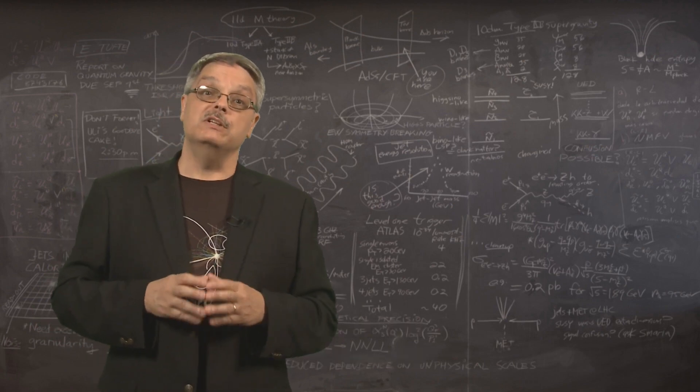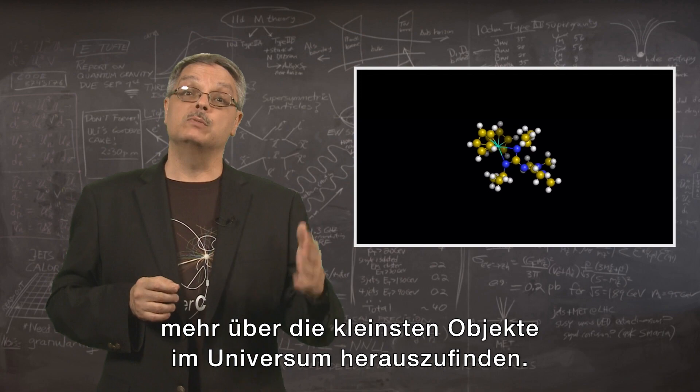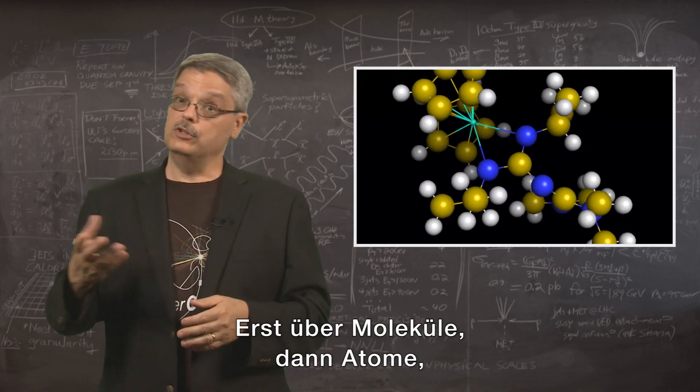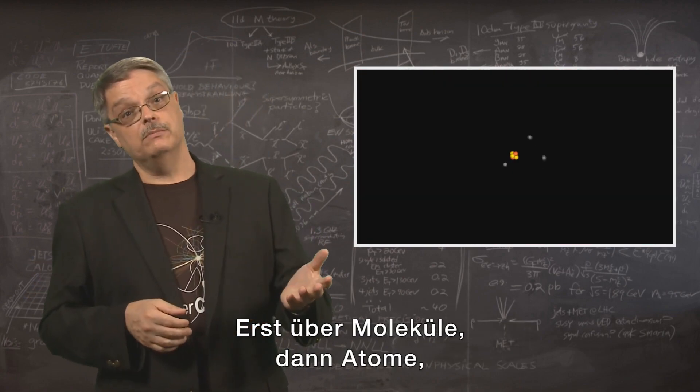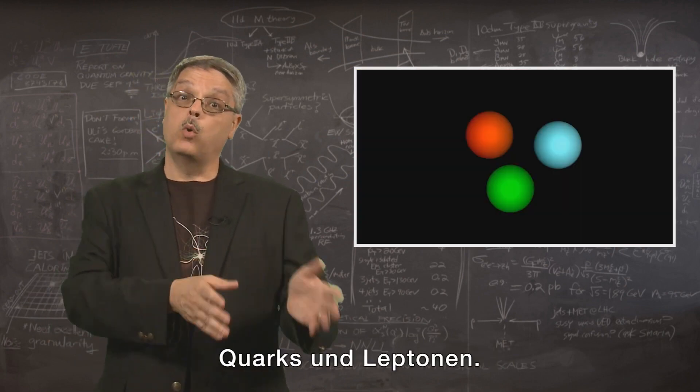In the last couple of centuries we have made great strides in our understanding of just what is the smallest object in the universe. First molecules, then atoms, and protons, neutrons, and electrons, and now finally quarks and leptons.